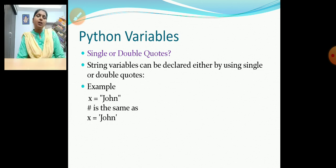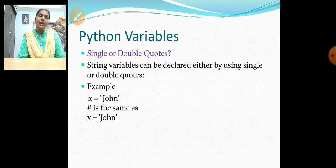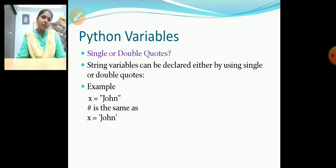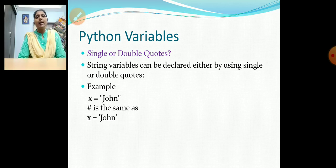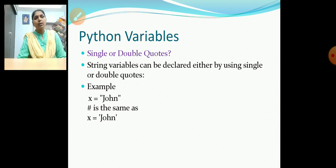An important concept is that strings can be declared in single quotes or double quotes. Unlike C or C++, where single quote means a single character and double quote means a string, in Python there is no single character — everything is treated as a string. So x = "John" is the same as x = 'John'. Both print statements give the same output: John.